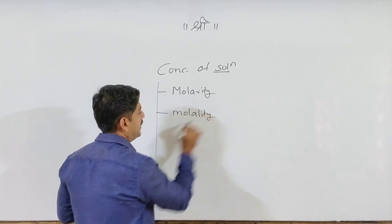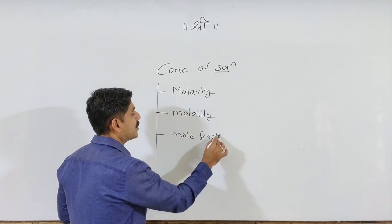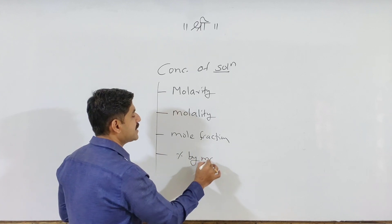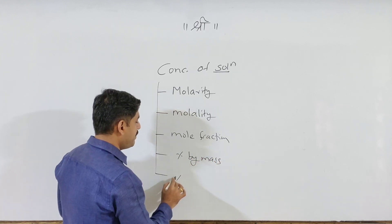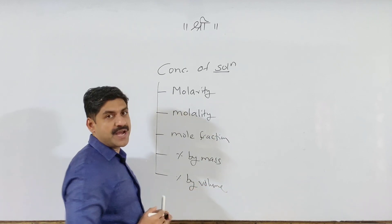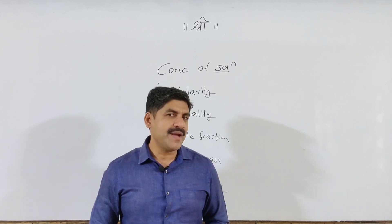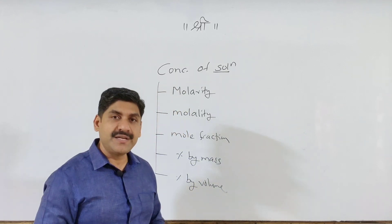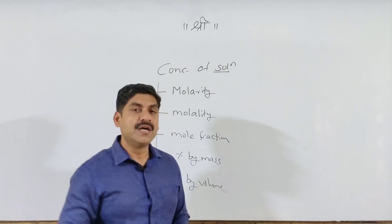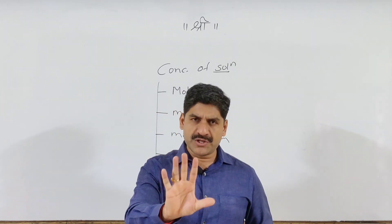Molality can be made. What is mole fraction? What is percentage by mass? This is percentage by volume. Now, formality and normality. For CET, normality and molarity need to be explained.